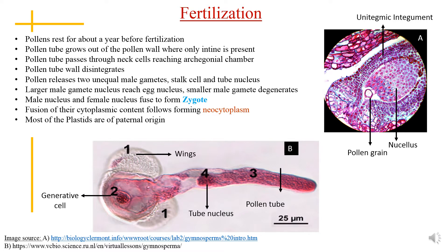In female Pinus cones, when it is one year old, bract scales move a little causing the cone to open and letting pollens inside the cone. After this, the bract scale moves back to its position and the female cone again closes into a tightly closed structure. The pollen grain gets trapped in a mucilaginous drop secreted by nucellus cells at the micropylar end. Later, this fluid dries up and the pollen rests there for about a year before fertilization can begin.